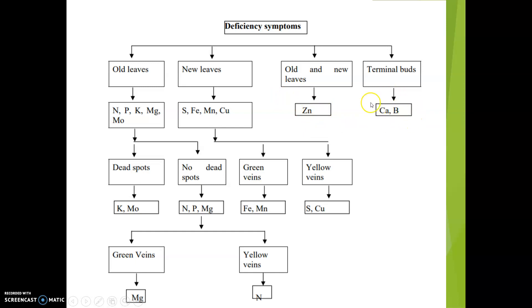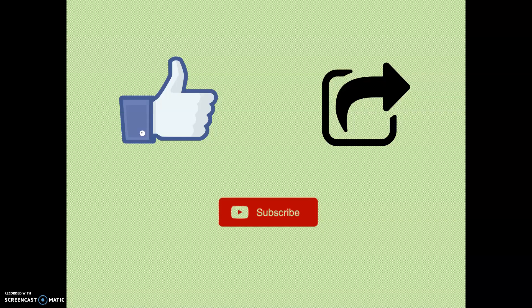In case of calcium and boron, the deficiency symptoms can be easily identified by underdeveloped terminal buds, which is a very common symptom. With this video, we are winding up the session on Mineral Nutrition. If you like this video, please give a thumbs up, share this with your friends, subscribe to our channel, and thank you for listening.